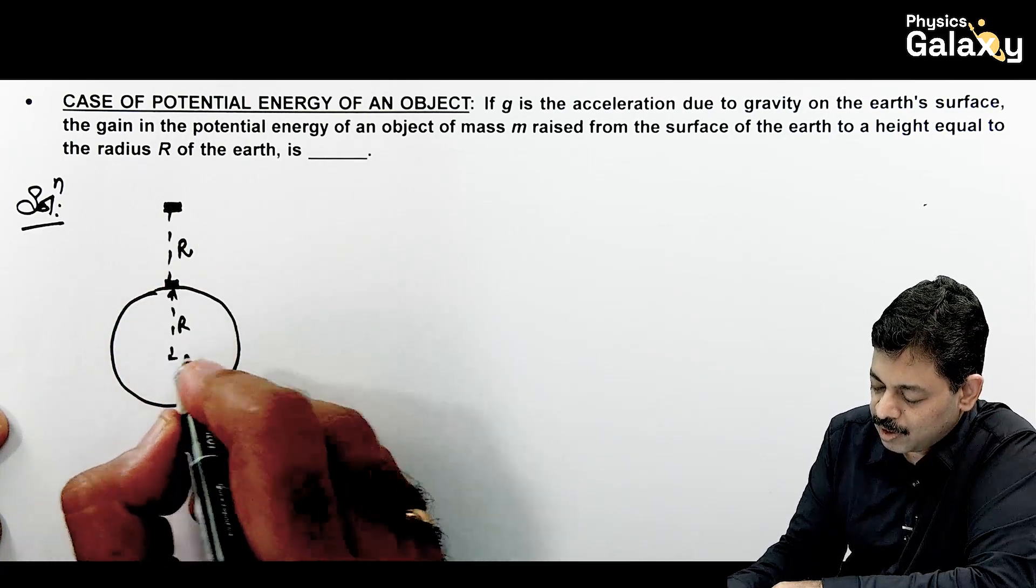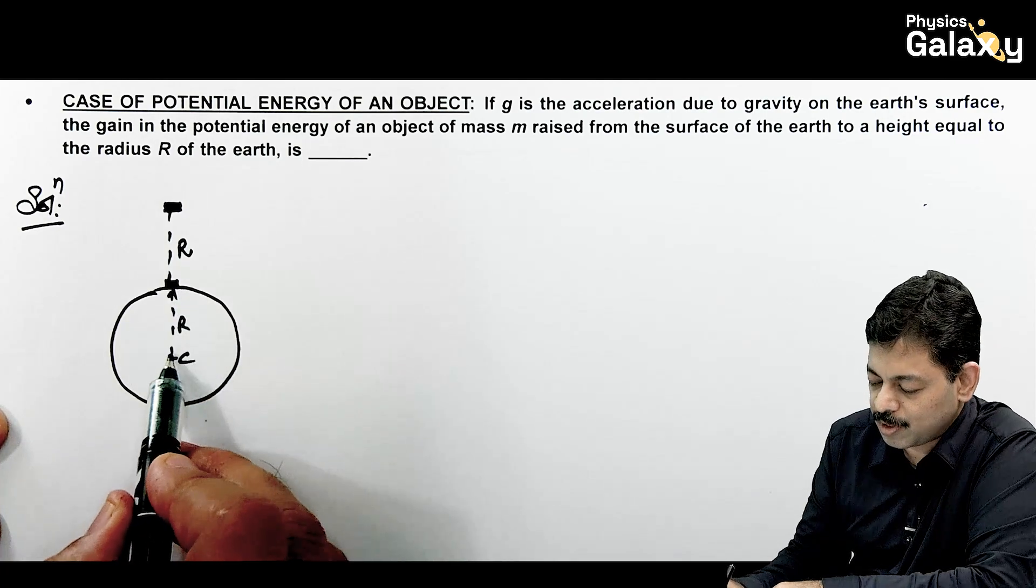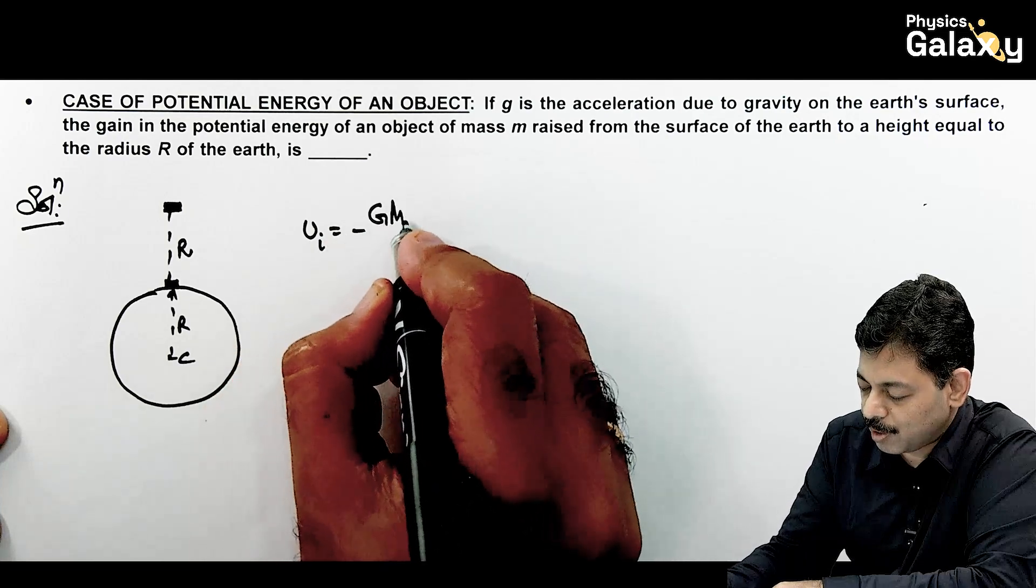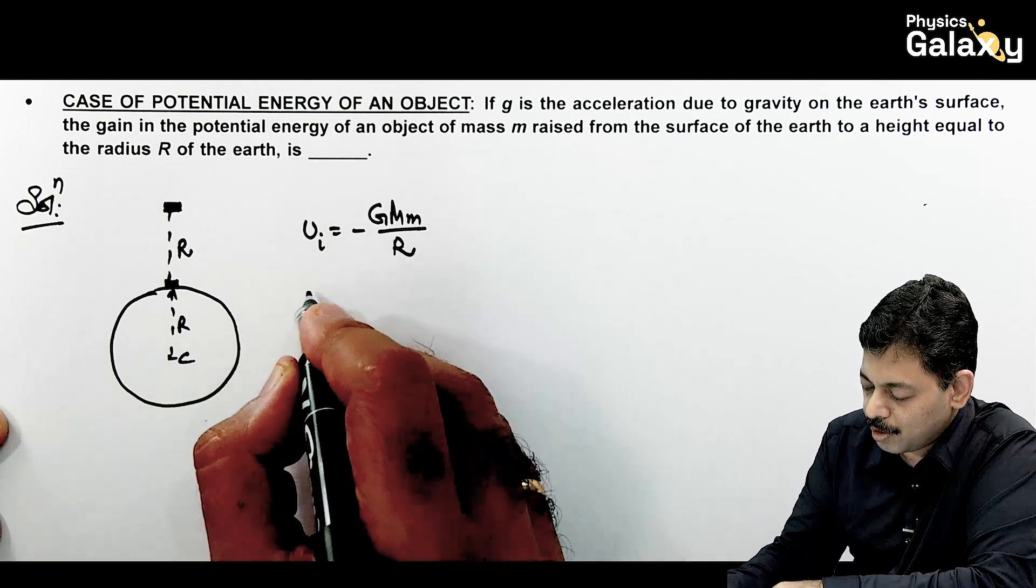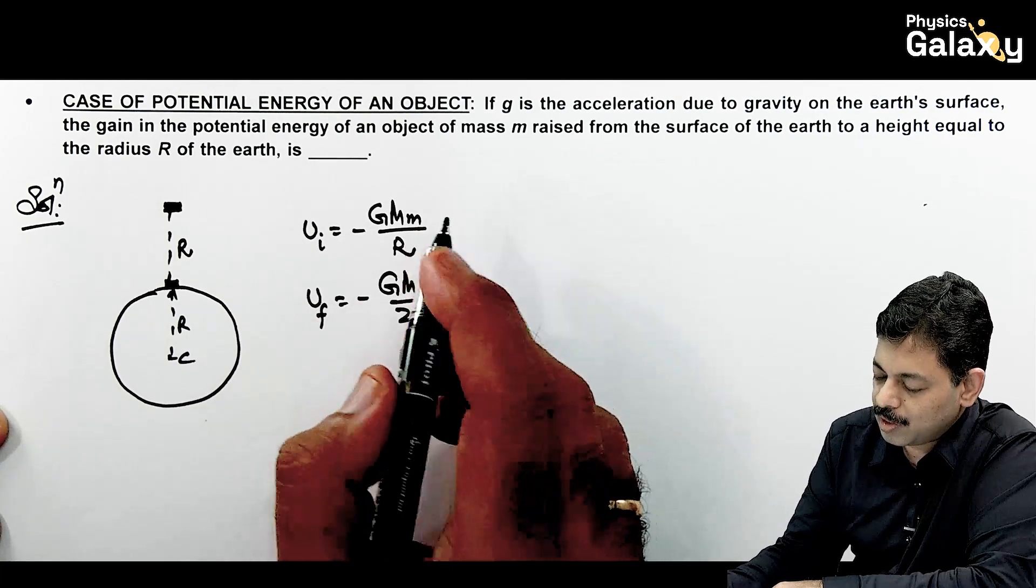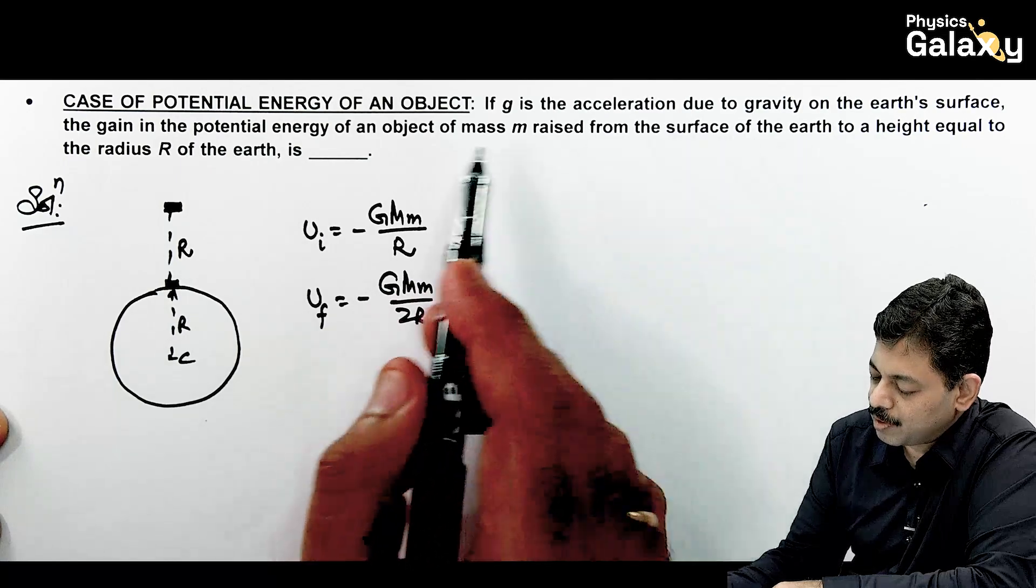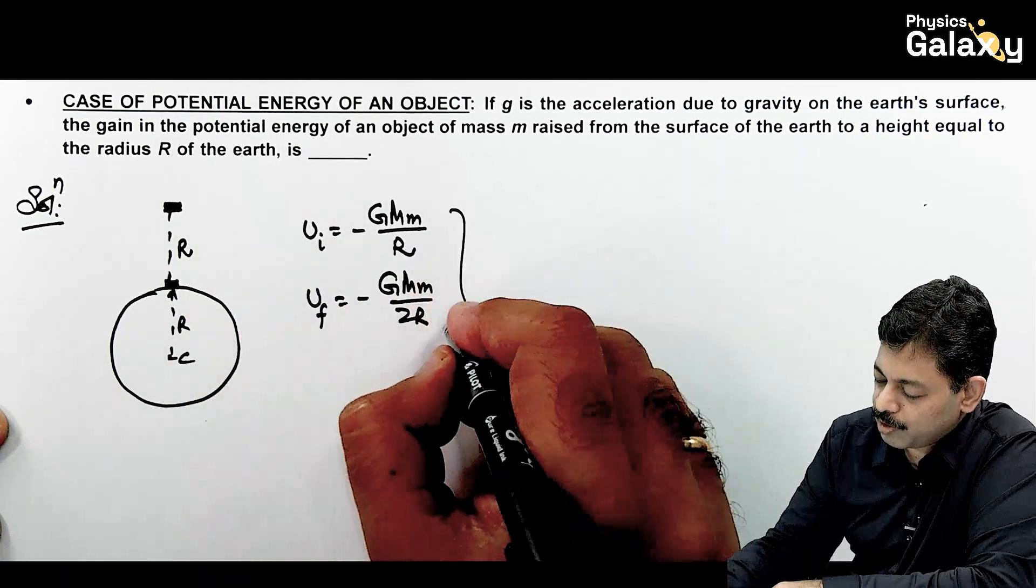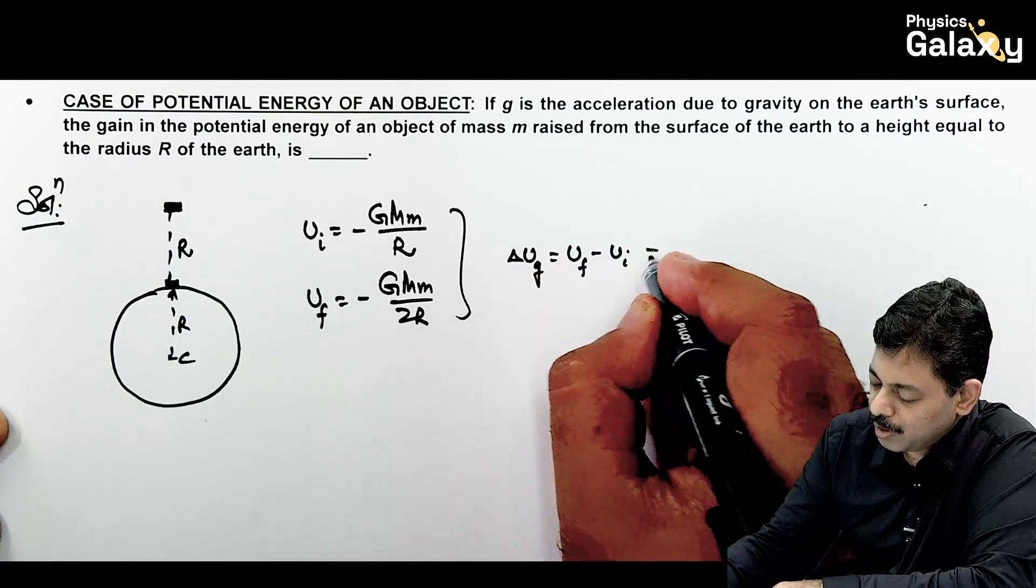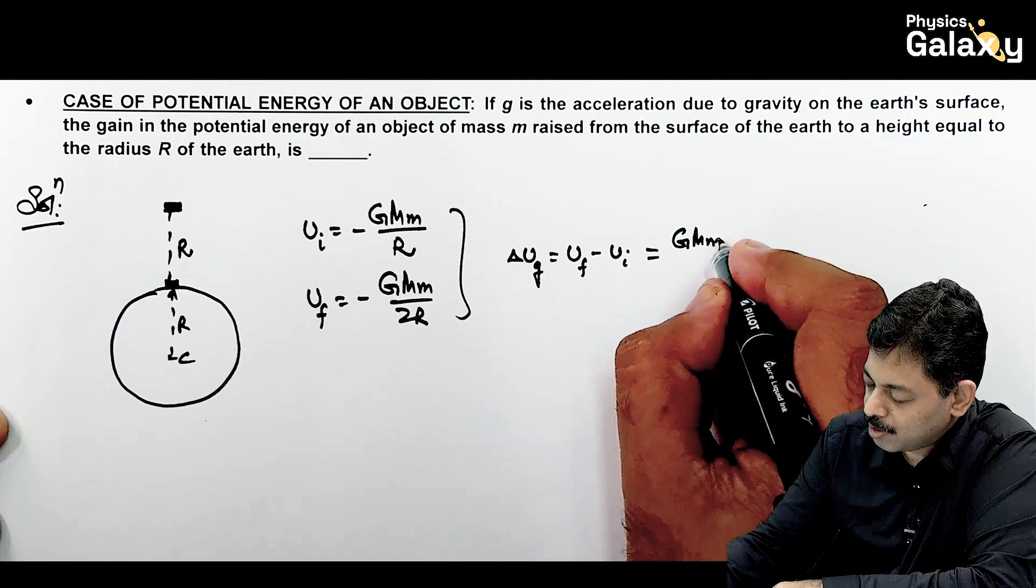So if initially it was at a position on the surface of Earth, Earth's center is a distance R, and now it is at 2R position. So initial potential energy, we can write minus GMm by R. And final potential energy, it will become minus GMm by 2R. And it is asking, what will be the gain in potential energy? From here, delta U gain can be written as U_f minus U_i.